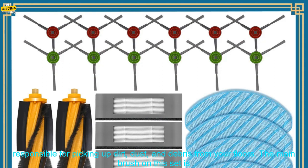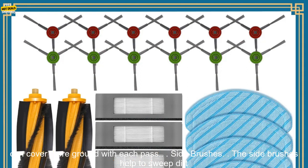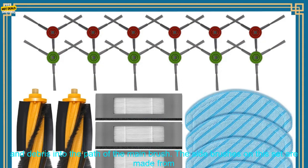Main Brush. The main brush is one of the most important parts of your robot vacuum cleaner. It's responsible for picking up dirt, dust, and debris from your floors. The main brush on this set is made from high-quality bristles that are designed to last. It's also wider than the original brush, so it can cover more ground with each pass.